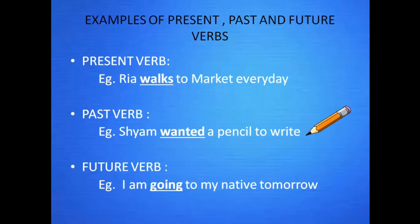Let's see a few examples of present, past, and future verbs. Present verb: Riya walks to the market every day. Here, walks is a present verb because it is a word in the present tense. Past verb: Shyam wanted a pencil to write. Wanted is a past verb — wanted is the past tense of want.